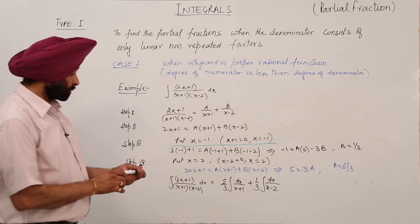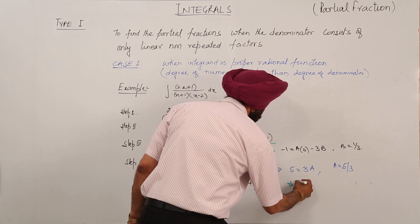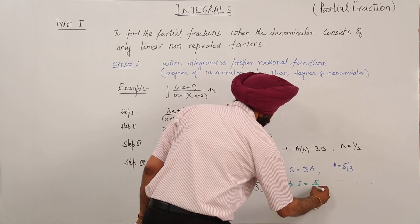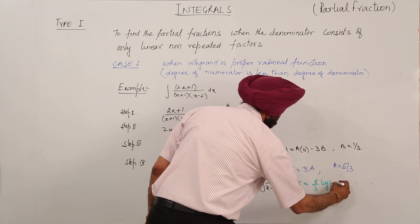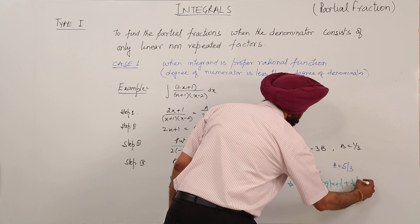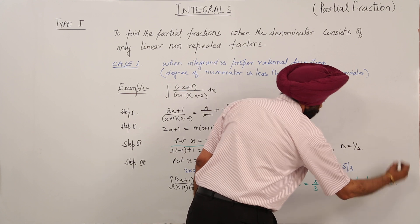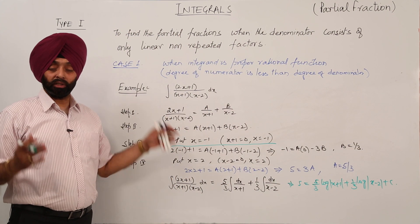And finally, the result is 5 by 3 log (x plus 1) plus 1 by 3 log (x minus 2) plus C. This is also okay.